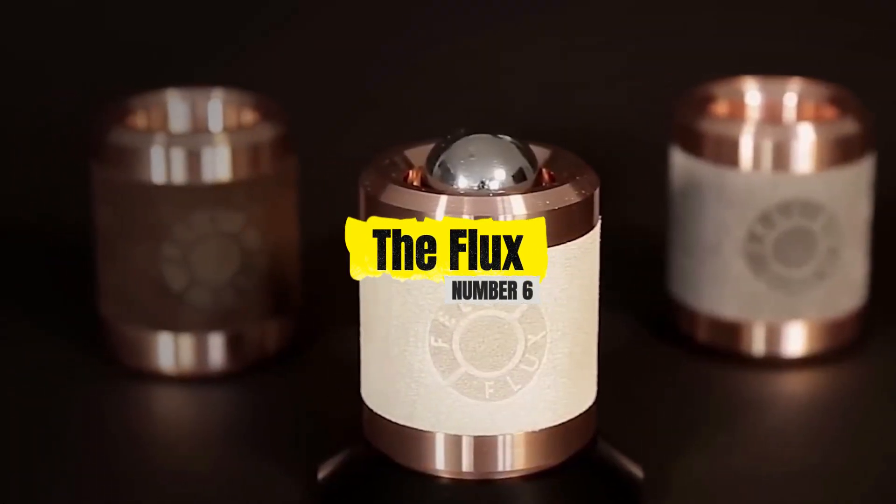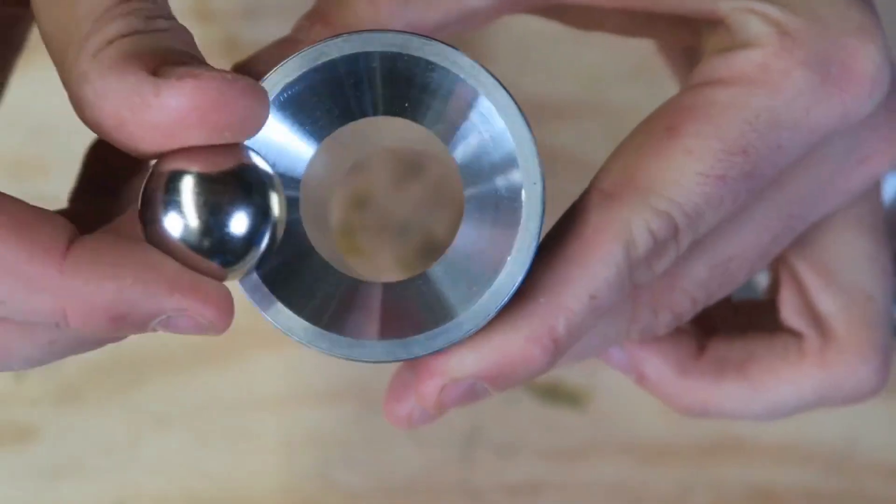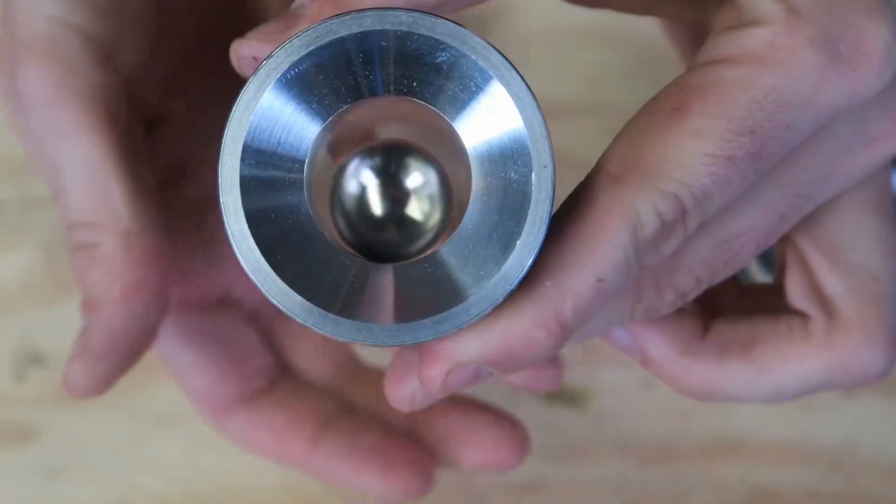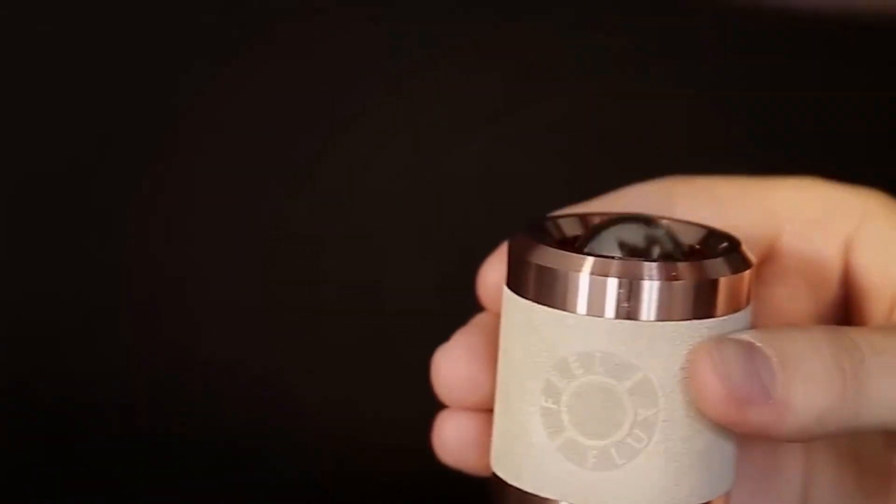Number 6. The Flux. Imagine dropping a solid metal ball through a copper tube, only to watch it slow down as if it's moving through honey. That's exactly what happens with the flux, and it's a stunning display of electromagnetic braking.